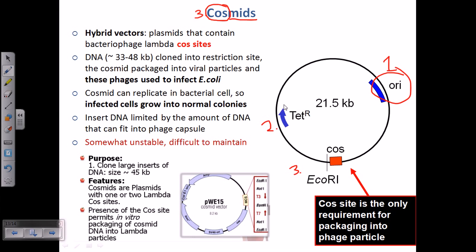The cos site is the only requirement for packaging into a phage particle, because if a DNA sequence has a cos site it can be packaged inside a bacteriophage head. By attaching the cos site onto these plasmids, we ensure they can be packaged into the bacteriophage, which can then be used to infect E. coli or any host bacterial cell onto which we are trying to transfer our gene. Gene transfer becomes easier because with normal plasmids it is quite difficult — we need to produce competent cells.